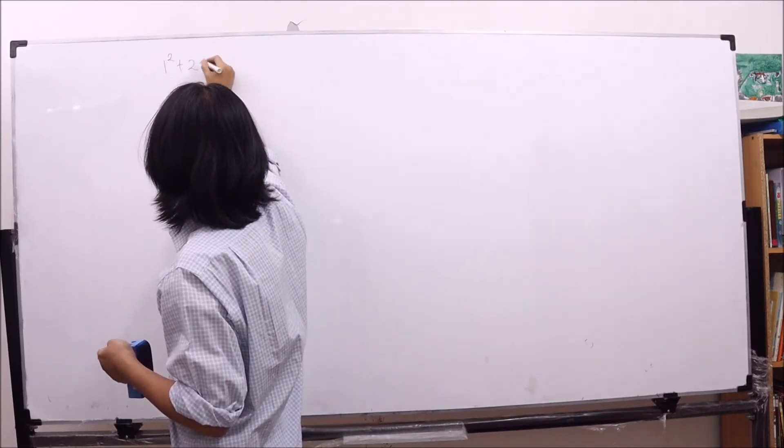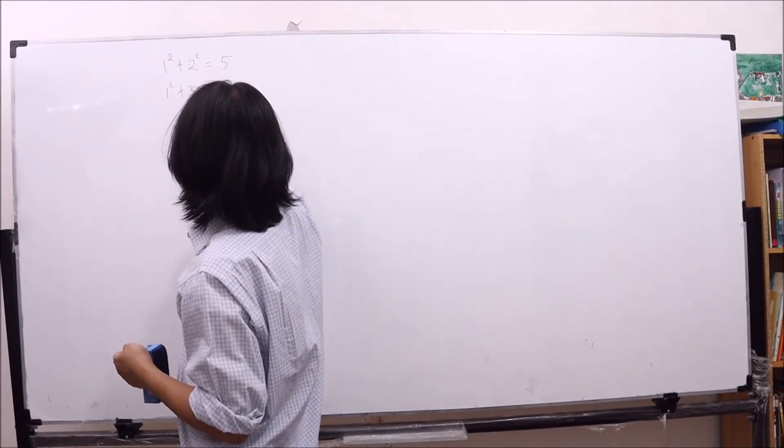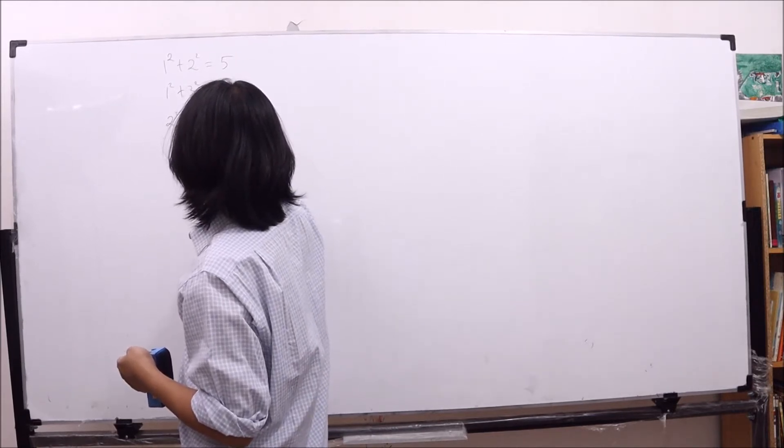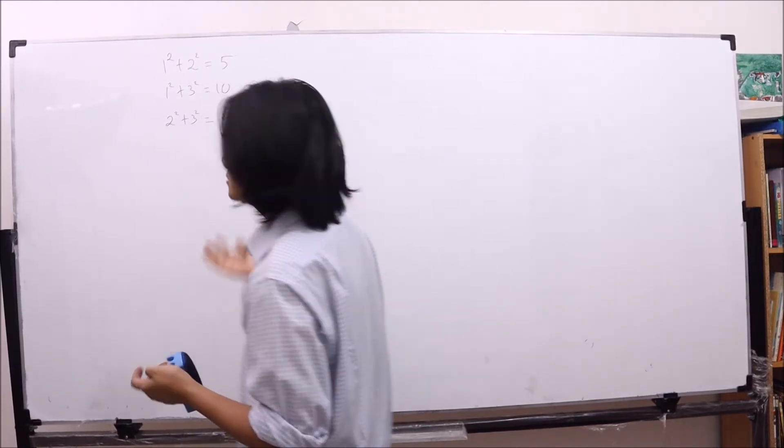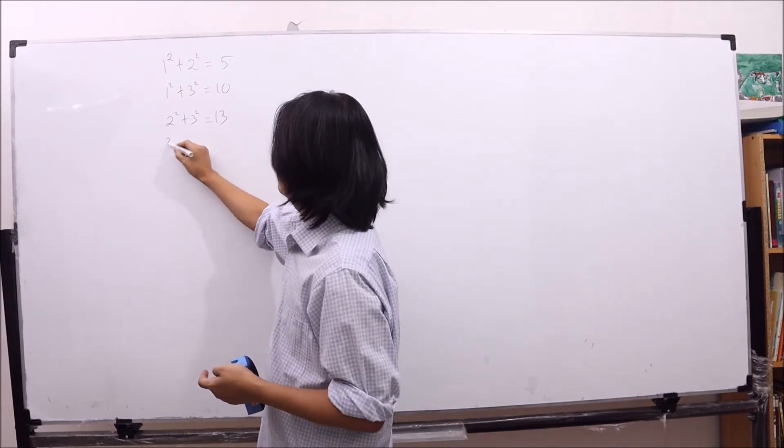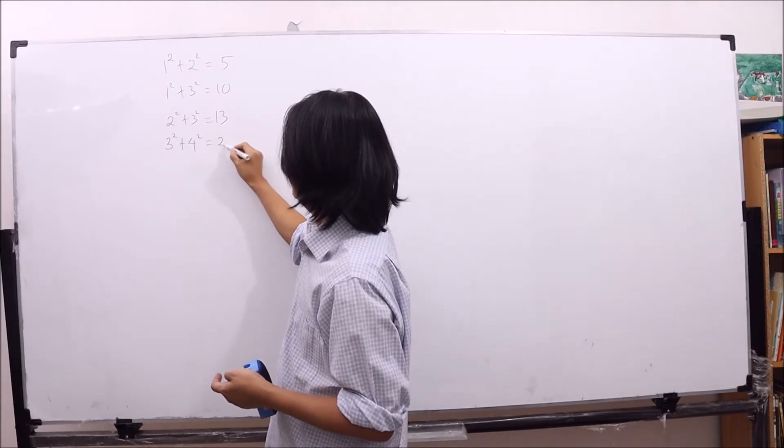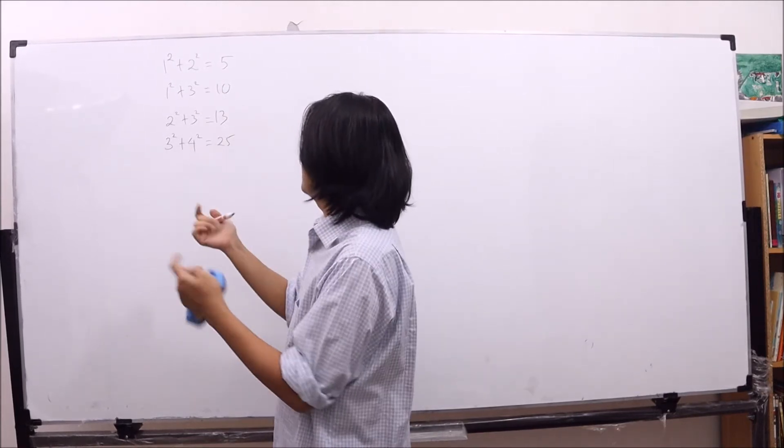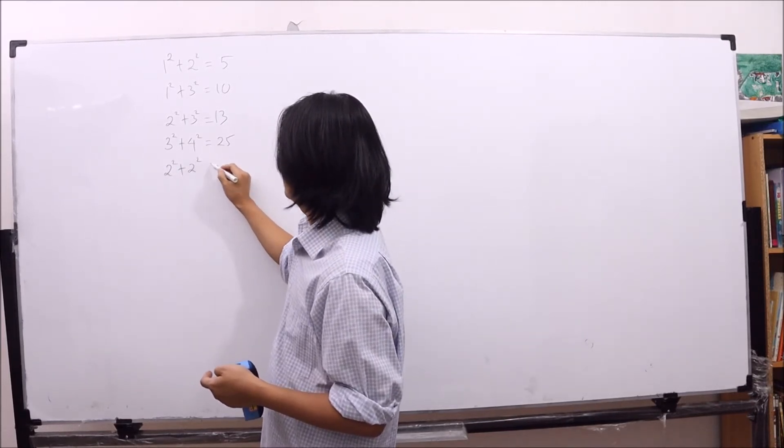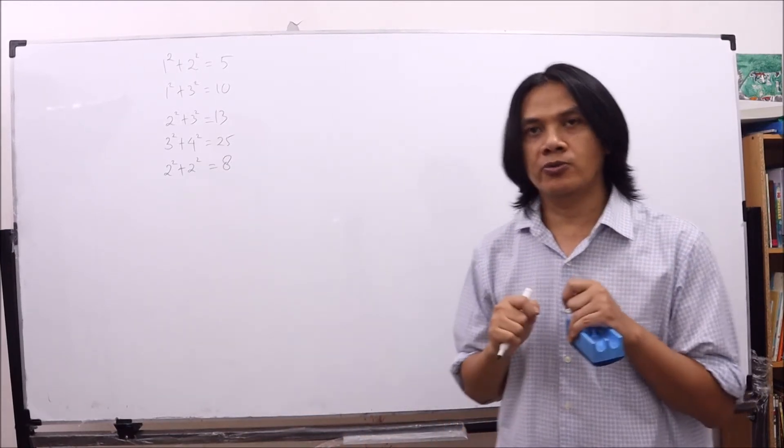1 squared plus 2 squared is 5. 1 squared plus 3 squared is 10. 2 squared plus 3 squared is 4 plus 9, which is 13. And then 3 squared plus 4 squared is 25. We can take the same number as well. For example, 2 squared plus 2 squared which is 8.